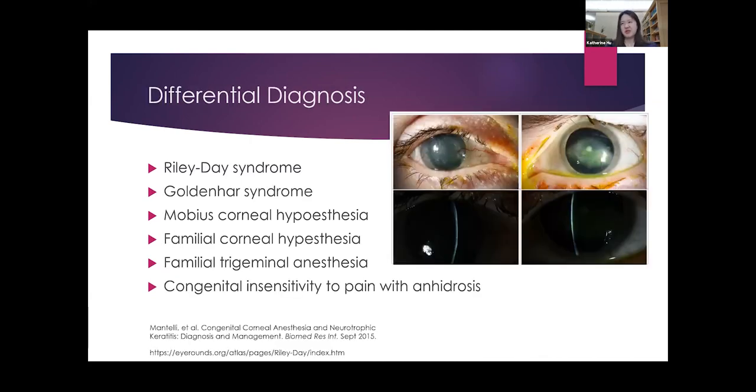I know as residents most of us are familiar with causes of neurotrophic keratopathy in adults, including classically topical anesthetics, iatrogenic injury after surgery, and herpetic infections. But I wanted to take some time to discuss the differential of congenital neurotrophic keratopathy, as these can be more rare entities we don't really encounter as much. The first one is Riley-Day or familial dysautonomia. This is autosomal recessive and seen almost exclusively in patients of Eastern European Jewish descent.